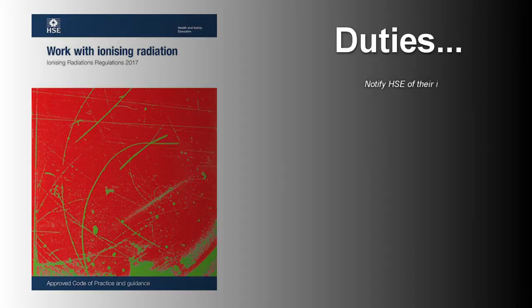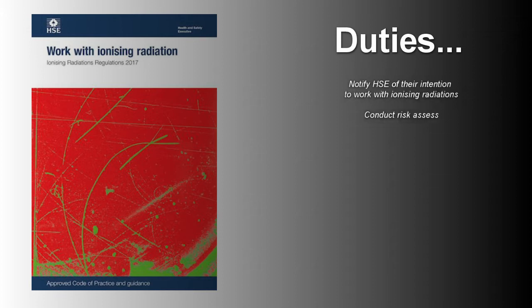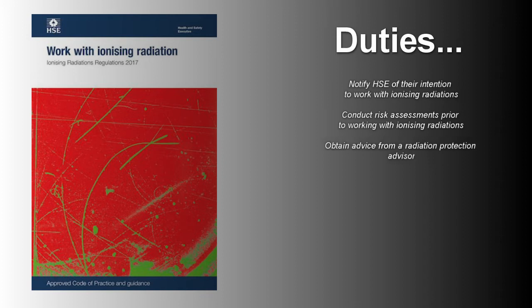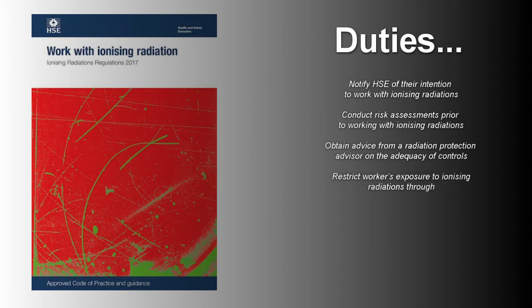In most cases employers are required to notify HSE of their intention to work with ionising radiations, conduct risk assessments prior to working with ionising radiations, obtain advice from a radiation protection advisor on the adequacy of controls, and restrict workers' exposure to ionising radiations through engineering controls, safe systems of work and personal protective equipment.